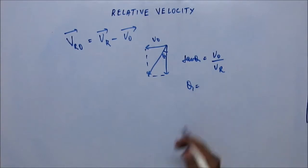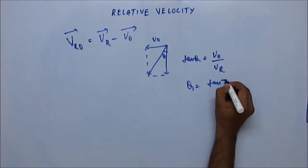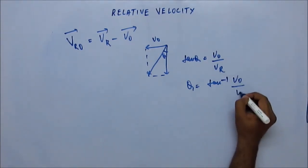So the angle theta which the observer would think that the rain is making from vertical would be tan inverse VO upon VR.